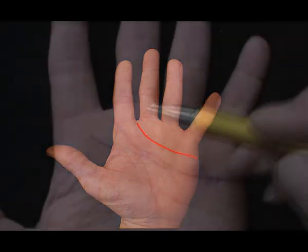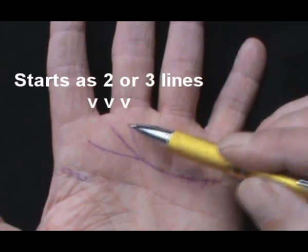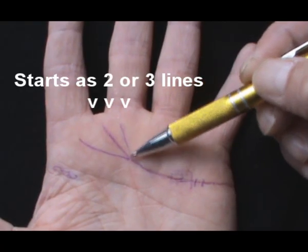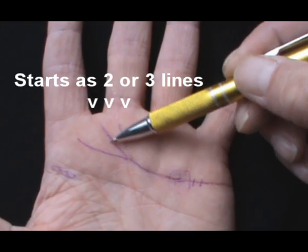If the heart line starts as two or three lines merging into one, this is good as they will all improve one's abilities to express more versatile feelings.